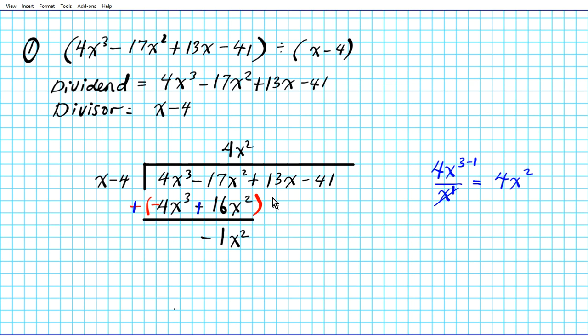Since we're dividing two at a time, we bring down the next term by descending degree. The degree-one term comes down: plus 13x. So we now have negative 1x² plus 13x.